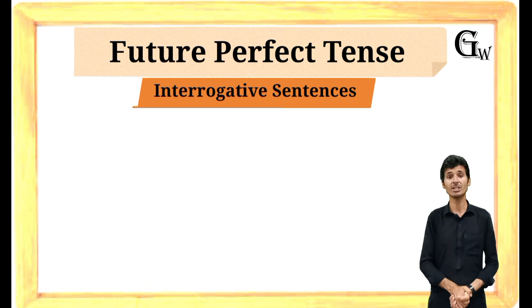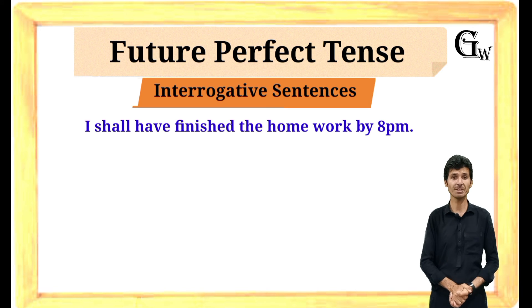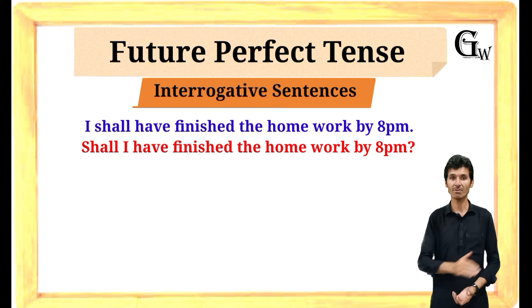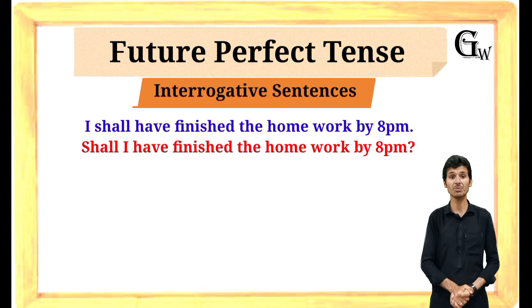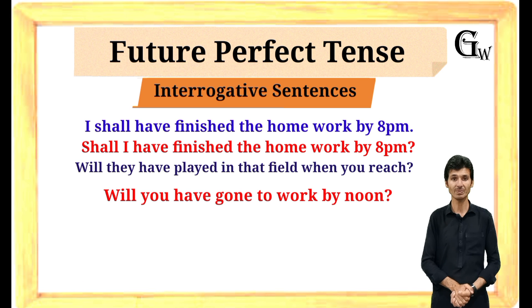Now let's learn how we form interrogative sentences. It is very simple. For example, we have the sentence: 'I shall have finished the homework by 8 PM.' To make it interrogative, we place 'will' or 'shall' at the beginning and keep the rest of the structure the same. For example: 'Shall I have finished the homework by 8 PM?' 'Will they have played in that field when you reach?' 'You will have gone to work by noon' becomes 'Will you have gone to work by noon?' — it's so simple.